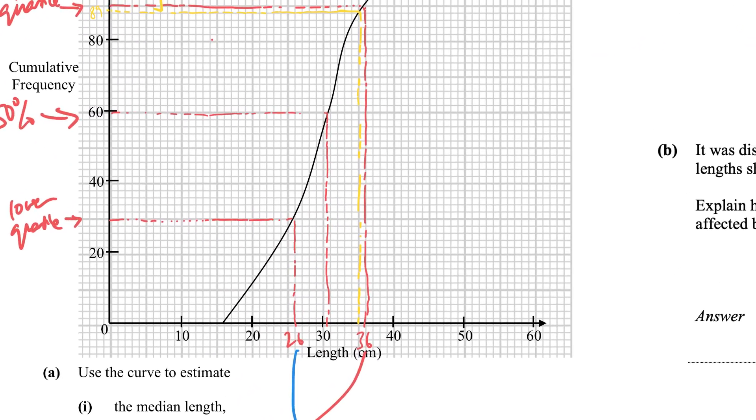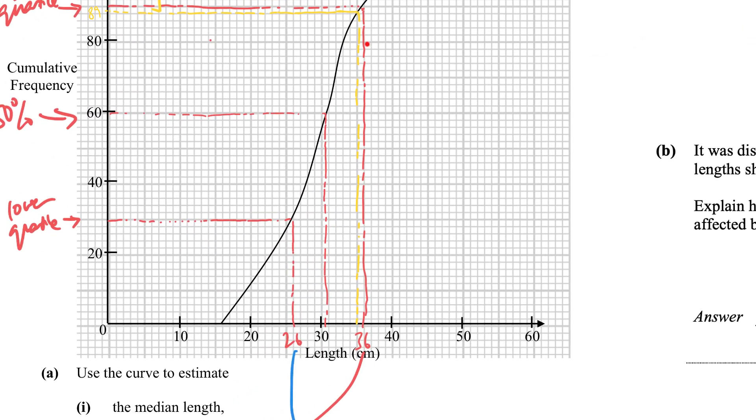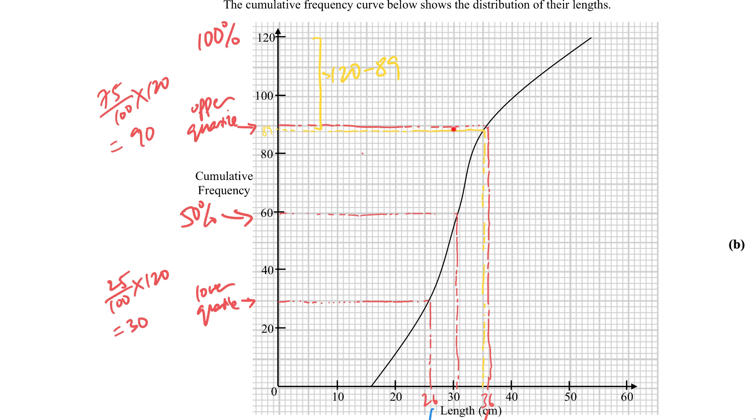So basically what we did is we take a look here, 35 fishes, we see how many fishes we're at. We're at 89. That means 89 onwards will give me greater than 35 cm in length.